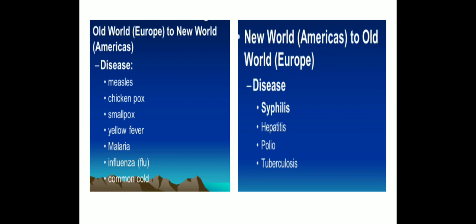So this was the impact of the Columbian Exchange. Not only were crops exchanged and cuisines changed, animals were exchanged and trade was affected, but microbes and diseases also affected the population and demography. This was all about the new world, old world, and the Columbian Exchange.